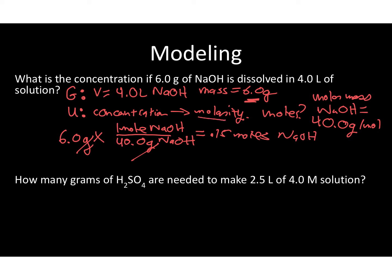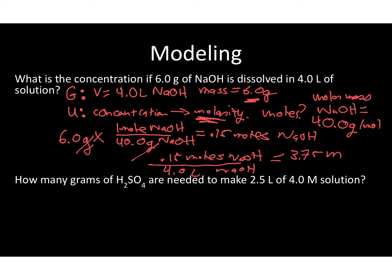My unknown is the molarity. To get the molarity, I take the moles and divide by the volume in liters: 0.15 moles of NaOH ÷ 4 liters of NaOH = 3.75 molar. Looking at significant figures for my initial givens — both have two sig figs — so I round to two sig figs. That gives me 3.8 molar solution of NaOH.